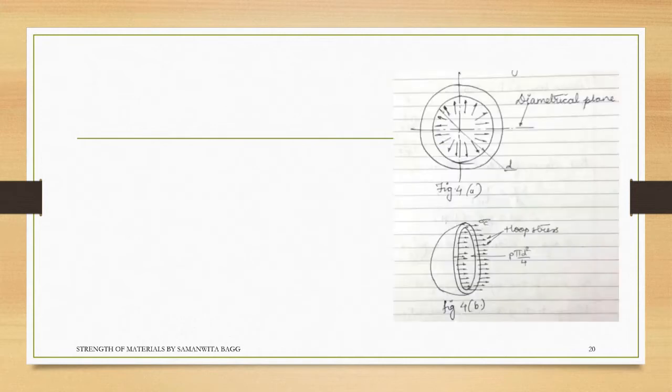It only has a diameter. Now you can see that this is a sphere that I have taken. This is the thickness t, this is very small because it's a shell, and this is the diameter d, internal diameter.